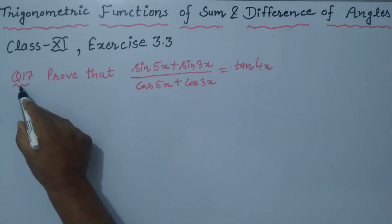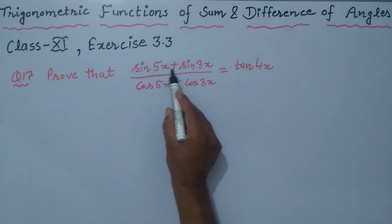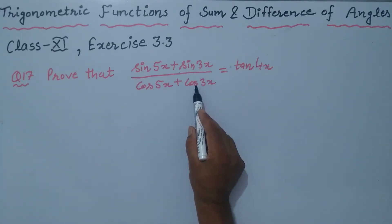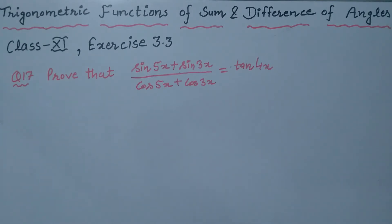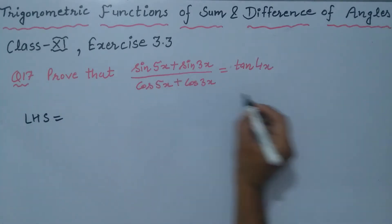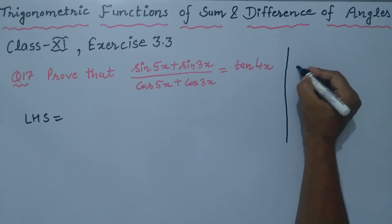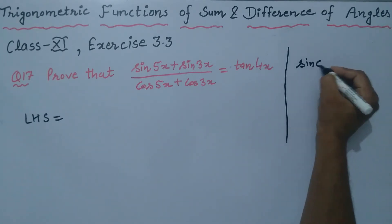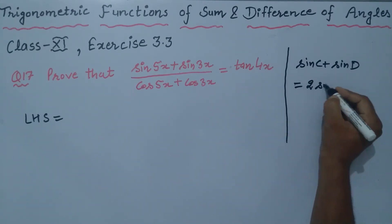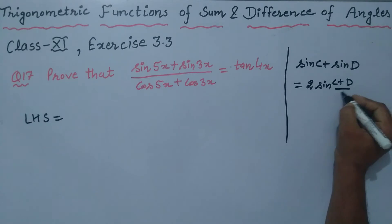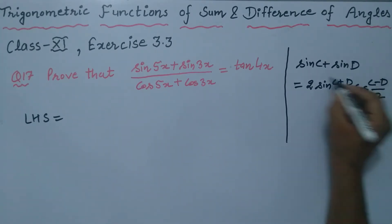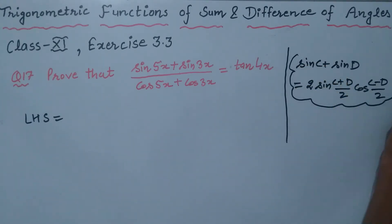Question number 17: prove that sin 5x plus sin 3x, whole divided by cos 5x plus cos 3x, is equal to tangent of 4x. In the numerator, we know that sin C plus sin D is equal to 2 sin (C+D)/2 into cos (C-D)/2.